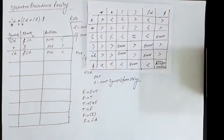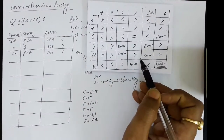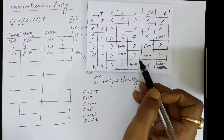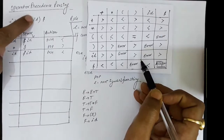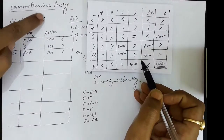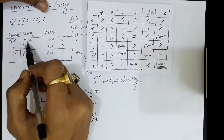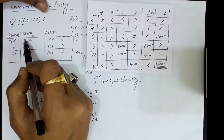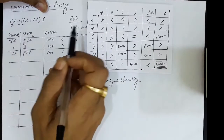In this lecture we will discuss operative precedence parsing and we'll do the parsing of the given string with the help of the parsing table that we have already prepared with the help of the leading and trailing operations of the given grammar. We have this string: id multiplied with opening braces id plus id closing parenthesis, and dollar is the last symbol in this string. We take a stack and push dollar as the start symbol.